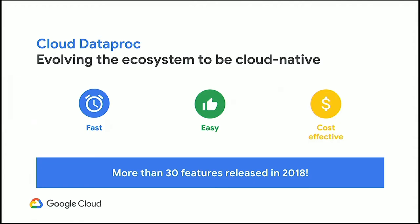Cloud Dataproc — we are really trying to change open-source software to be cloud-native. This means taking features that are fast, easy, and cost-effective and building around those. We launched more than 30 features last year alone. This is still an area Google is heavily investing in. If you want to know more about specific features, we're doing an entire Dataproc feature session tomorrow at 11. For now, I'm going to hand over to Ravi, who's going to talk about how Qubit is actually using some of these features.